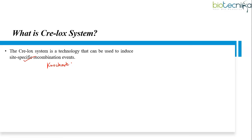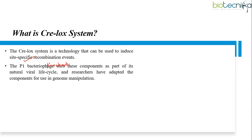In detail, this system consists of two components which are derived from P1 bacteriophage: the CRE recombinase and the LOX-P recombination site. P1 bacteriophage uses these two components as parts of their natural viral life cycle, and researchers have adapted these components for use in genome manipulation.